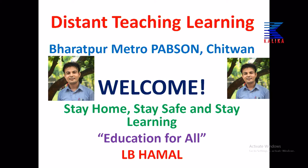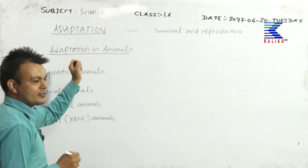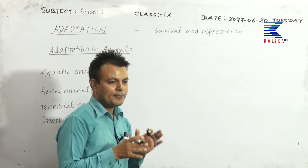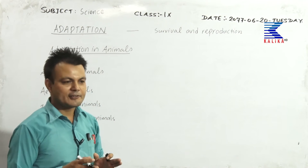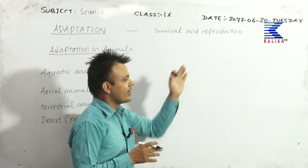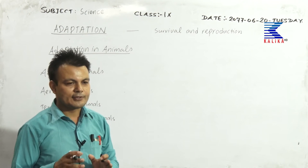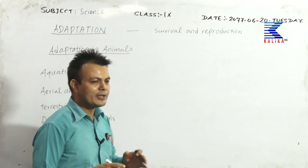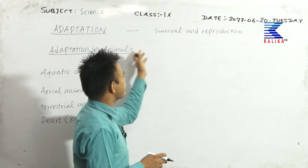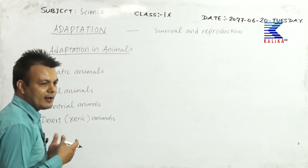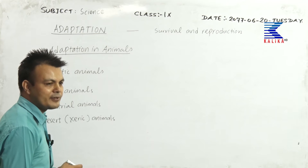So let's begin today's class. Today I'm going to teach you adaptation. Adaptation is meant for survival and reproduction — because of adaptational characteristics, organisms survive and are able to reproduce successfully. That is the meaning of life, being survived and being successful. We talked about adaptation of plants in the previous class.